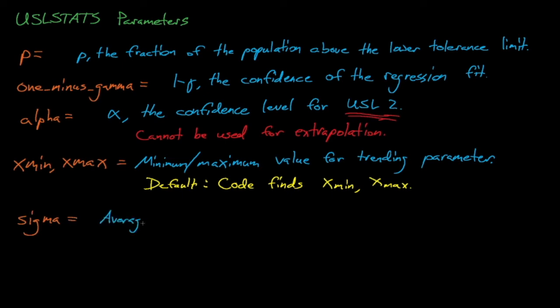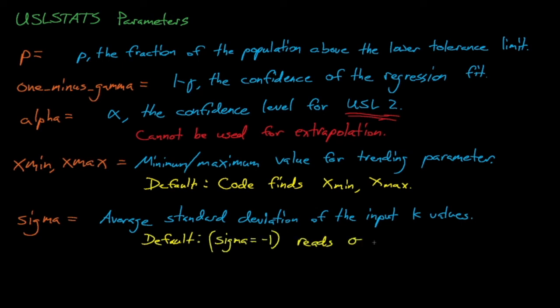Next, the sigma parameter allows the user to specify the average standard deviation for the C over E data points instead of manually entering sigma for each point. If sigma is entered, then USL stats will use that sigma for each benchmark data point and will assume that the triplet of benchmark data is actually a doublet or a pair of data that describes only x and C over E for each benchmark.